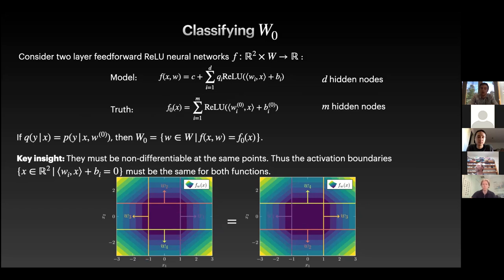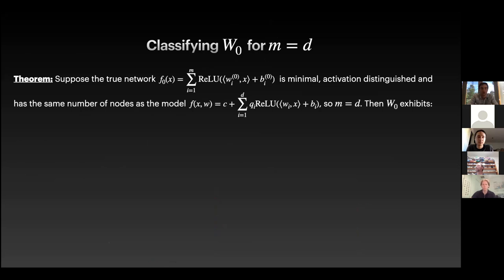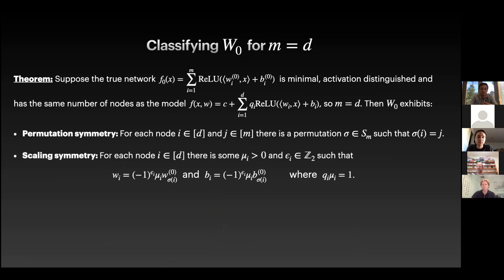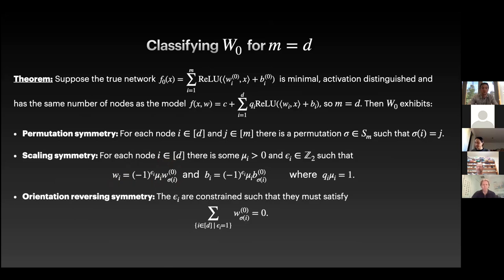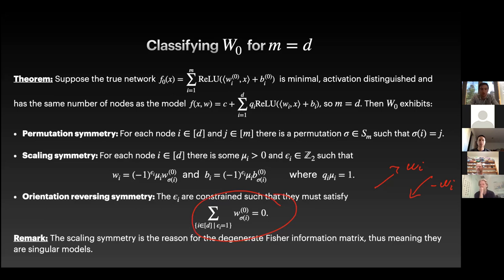And viewing it in this way, Watanabe says that singular models are better able to infer hidden structure from random phenomena. And this is because the model complexity is measured by the RLCT, not just the number of parameters in the model. So, we are now going to try to analyze how the posterior prefers different singularities in the space of true parameters. So, to this end, we now want to have a look at what are the different singularities on the space of true parameters. We will classify W0 in the realizable case, where we assume that the truth is given by a two-layer feedforward ReLU network with M hidden nodes. And if we assume this, then classifying W0 is equivalent to classifying functional equivalents of these ReLU networks. The key insight here is that they have to be non-differentiable at the same points.